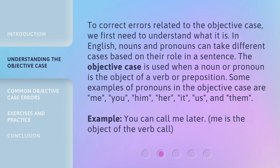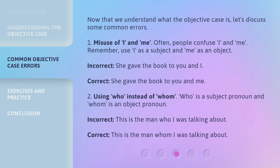Example: 'You can call me later.' Me is the object of the verb 'call.' Now that we understand what the objective case is, let's discuss some common errors. Number 1: Misuse of 'I' and 'me.' Often, people confuse I and me. Remember, use 'I' as a subject and 'me' as an object. Incorrect: 'She gave the book to you and I.' Correct: 'She gave the book to you and me.'